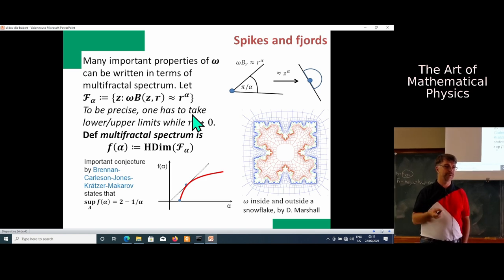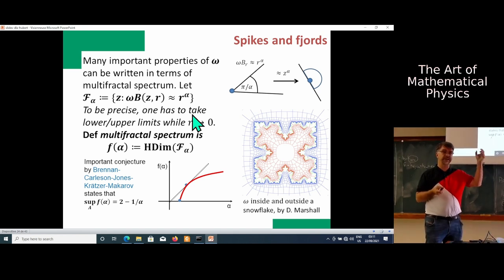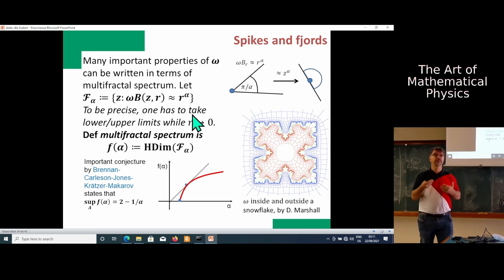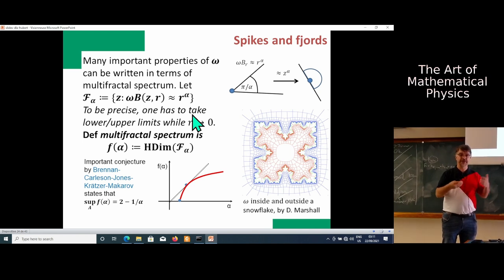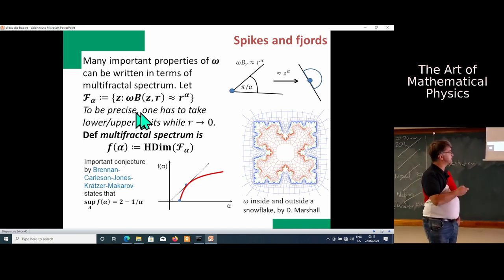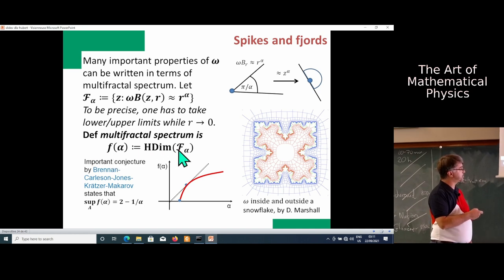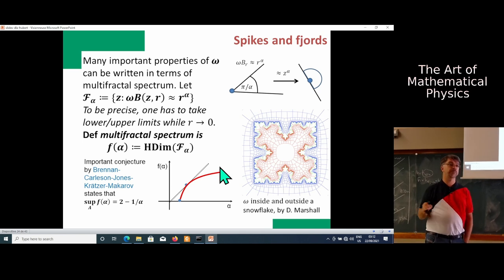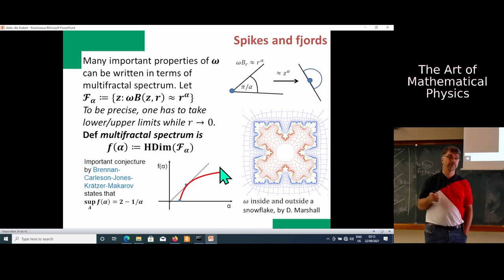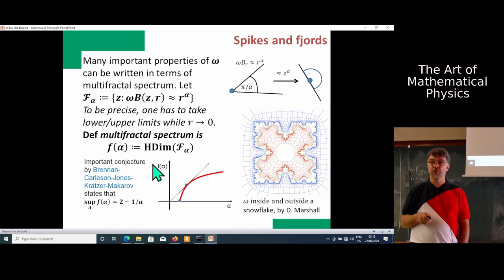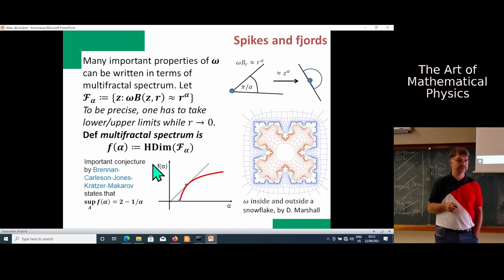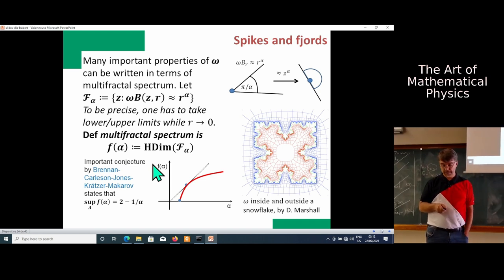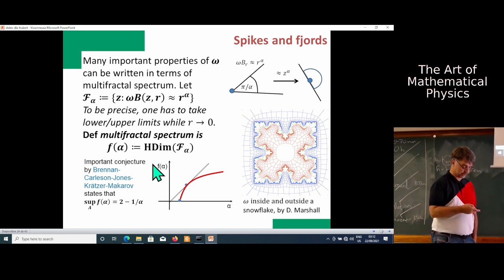You take the set F alpha, which is the set where harmonic measure behaves as if there is pi over alpha angle, where harmonic measure is approximately r to the power of alpha. Multifractal spectrum is defined as f of alpha - the dimension of this set. There is a very nice conjecture due to Brennan-Carleson, John Schroeder, and Makarov, that if you take supremum of f of alpha for harmonic measure, it will be exactly 2 minus 1 over alpha. It's a pure numerological conjecture, kind of like Babylonian mathematics.